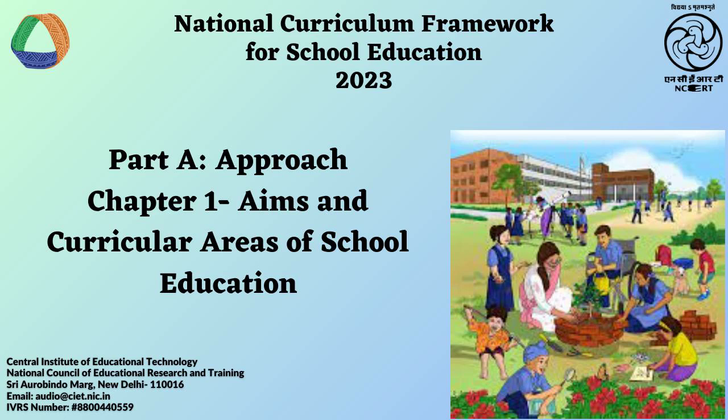Before we elaborate on the aims of school education, it is useful to clarify the meanings of the words knowledge, capacities, values and dispositions as used in this document. A. Knowledge refers to descriptive knowledge, i.e., knowing that — for example, knowing that the earth revolves around the sun, or knowing that Mahatma Gandhi played a central role in India's independence movement. A very large part of the understanding of the world is attained through this form of knowledge, expressed through theories, concepts and principles.